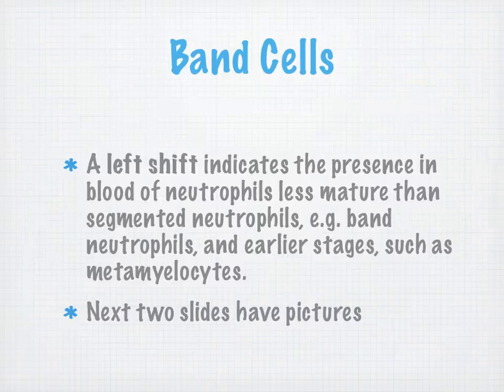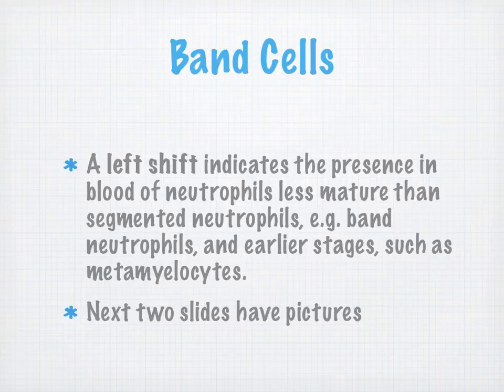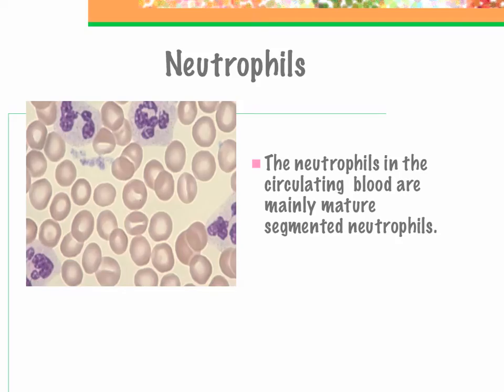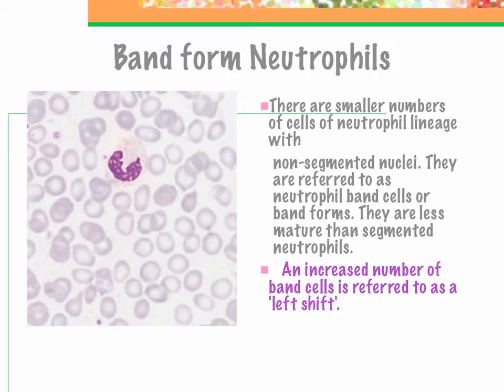Band cells and the 'shift to the left' — a term you'll hear in laboratory medicine — indicates the presence in the blood of neutrophils less mature than segmented neutrophils, such as band neutrophils or earlier stages like metamyelocytes. In circulating blood, there are mainly mature segmented neutrophils. Band forms are smaller numbers of cells with non-segmented nuclei. They're less mature than the segs, and an increased number of band cells is referred to as a shift to the left — a very important concept.